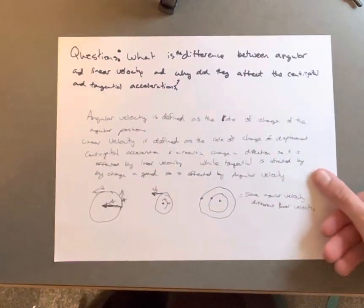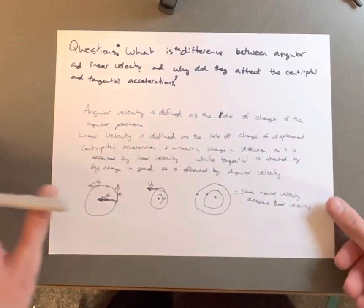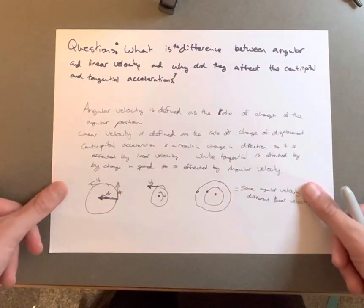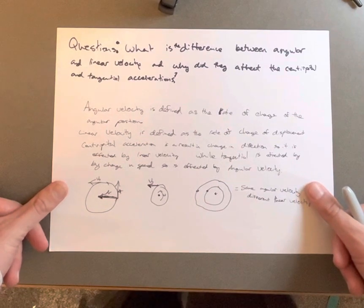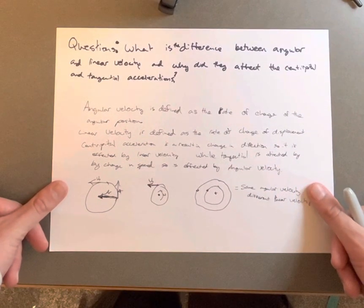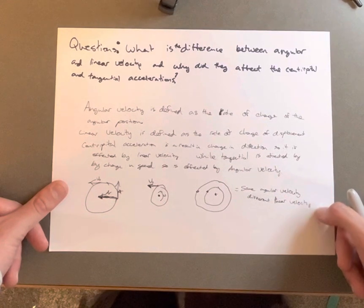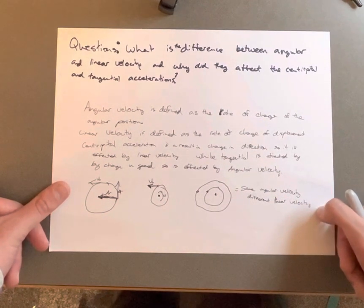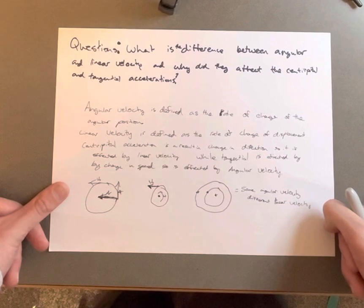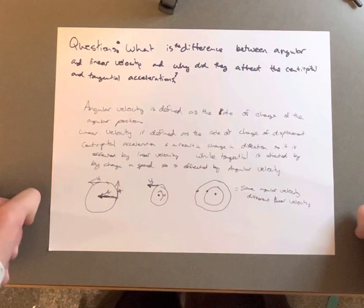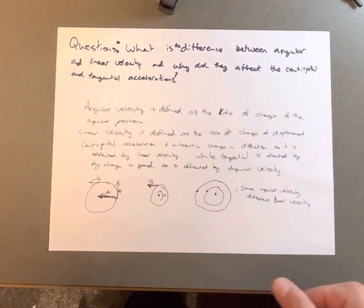What is the difference between angular and linear velocity, and why does this affect centripetal and tangential acceleration? Angular velocity is defined as the rate of change of angular position. Linear velocity is defined as the rate of change of displacement. Centripetal acceleration results from a change in direction, so it is affected by linear velocity, while tangential acceleration is affected by change in speed, so it is affected by angular velocity.